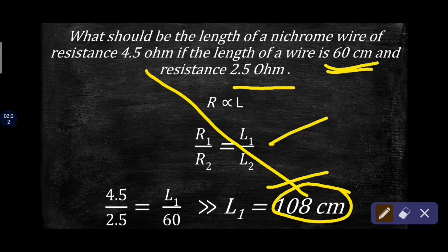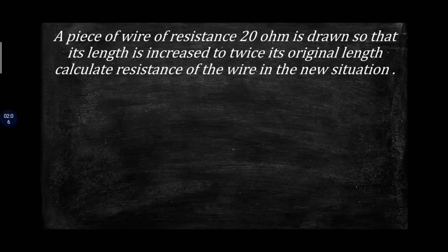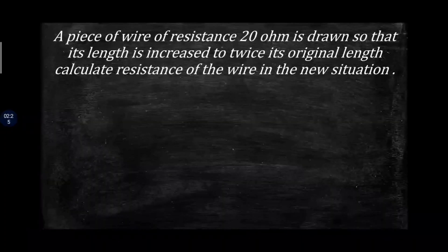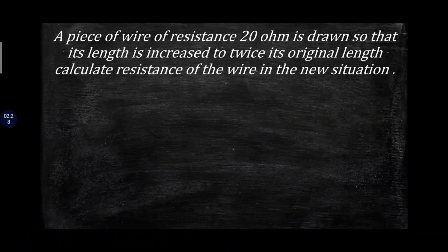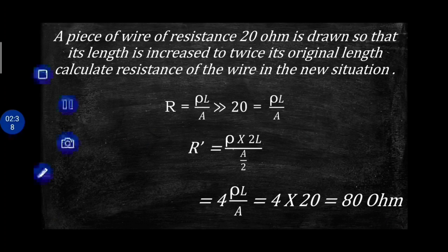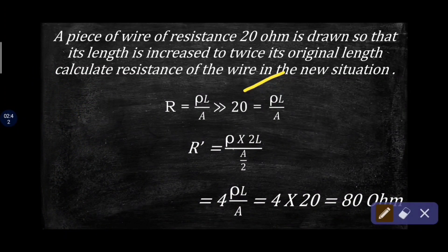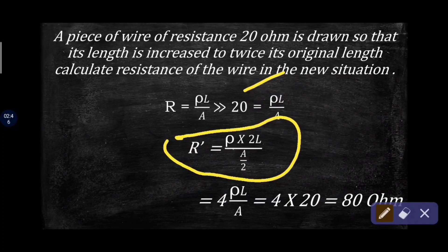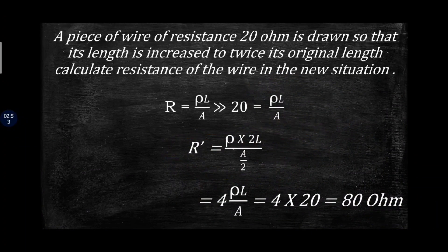Second question: A piece of wire of resistance 20 ohm is drawn so that its length is increased to twice the original length. In the first situation, the original resistance is 20 ohm. When the wire is drawn and stretched, the length becomes 2L and the area becomes A/2. Putting in the values, the answer will be 80 ohm.